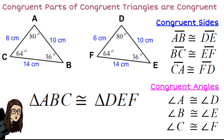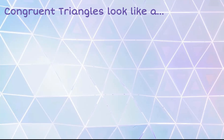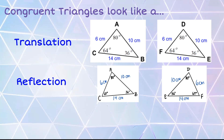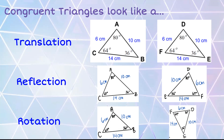This is why we write it as triangle ABC is congruent to triangle DEF — because angle A corresponds to angle D, angle B to angle E, angle C to angle F, and the sides in between are also congruent. Congruent triangles can look like they have been translated, reflected, or rotated. It doesn't matter if you turned it, flipped it, or shifted it — if they're the same shape and the same size, then they are congruent.